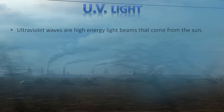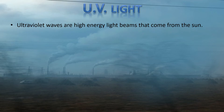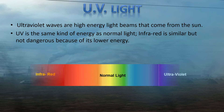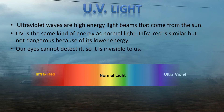UV light are high-energy light beams that come from the sun. UV is the same kind of energy as normal light — it is all on the electromagnetic spectrum. Infrared is similar, but not as dangerous because it is lower energy. Both of these forms of light are invisible to us because our eyes have not evolved to detect it, but it is still there.